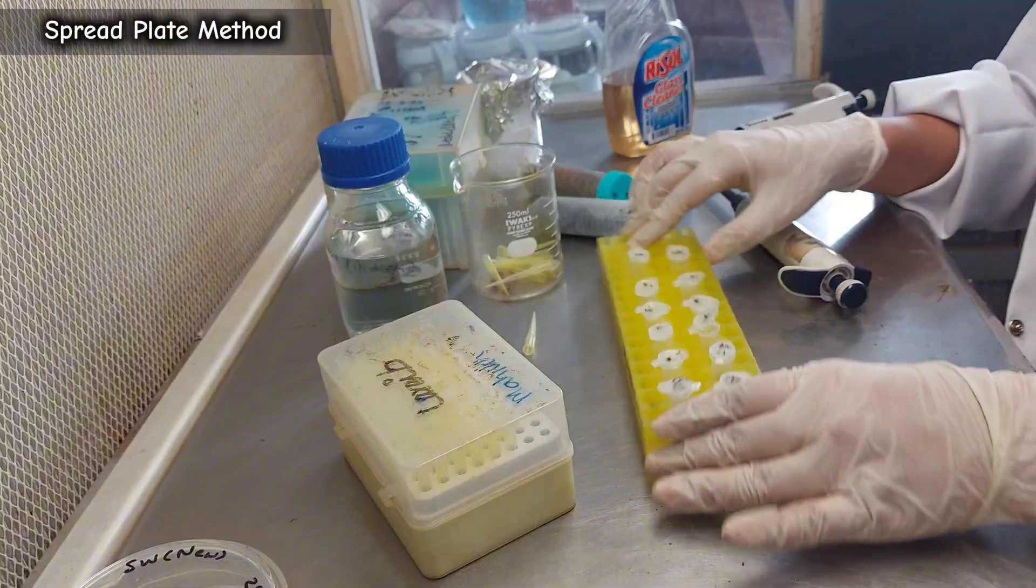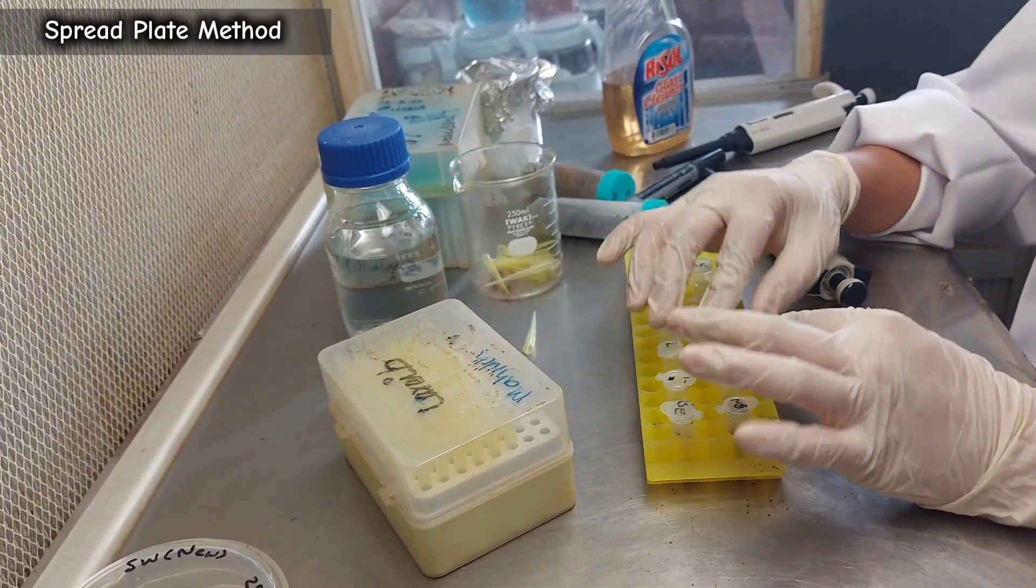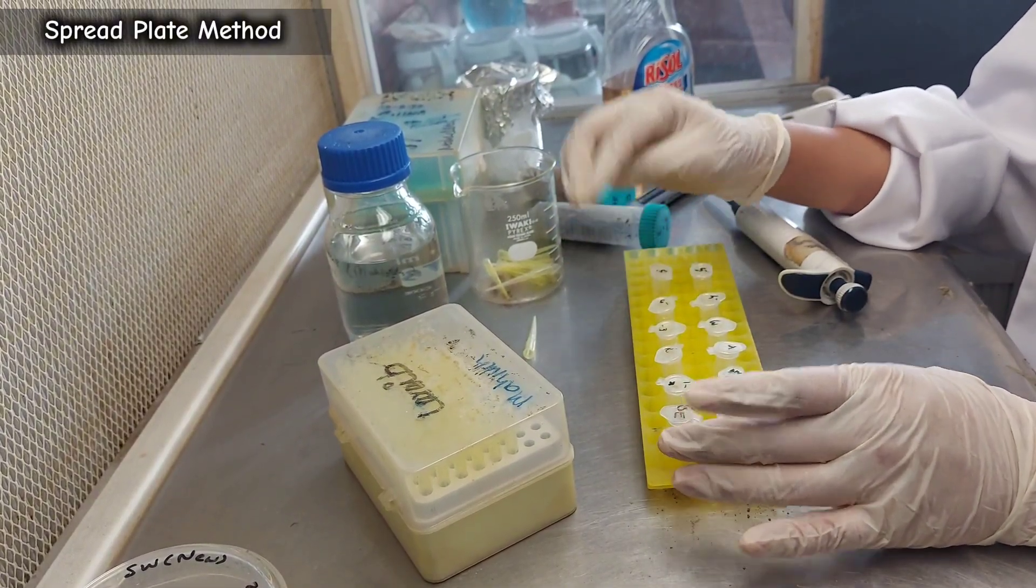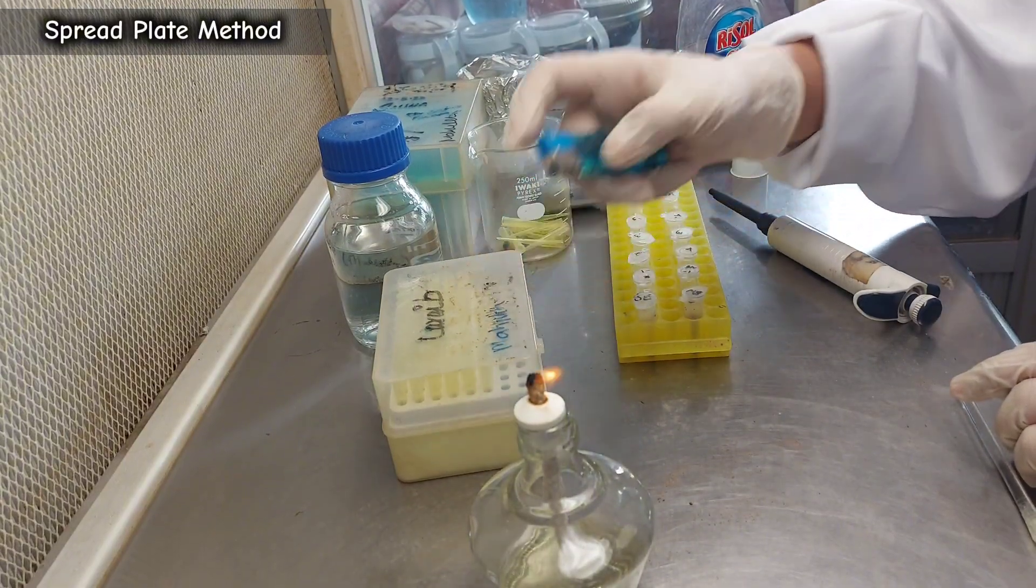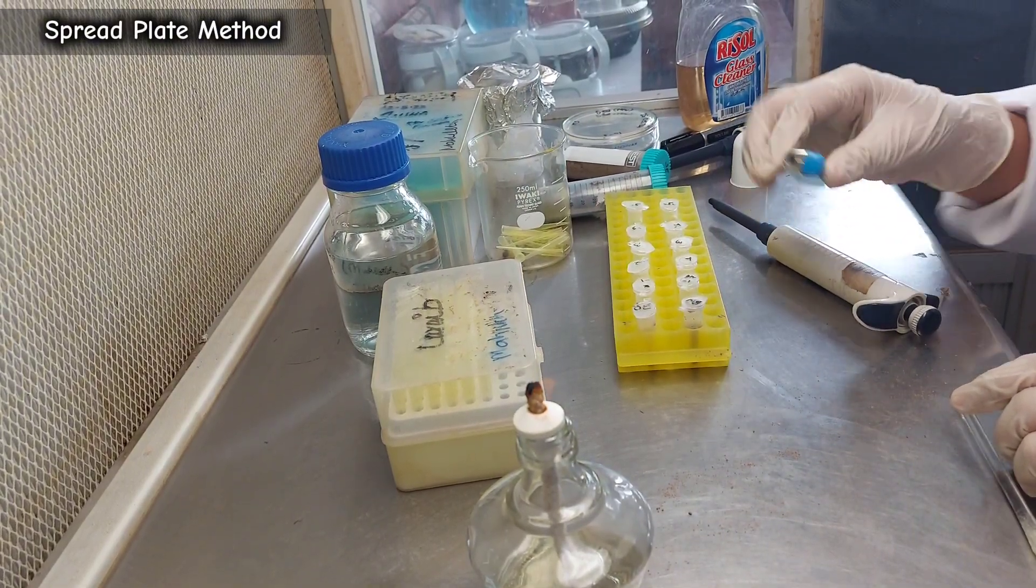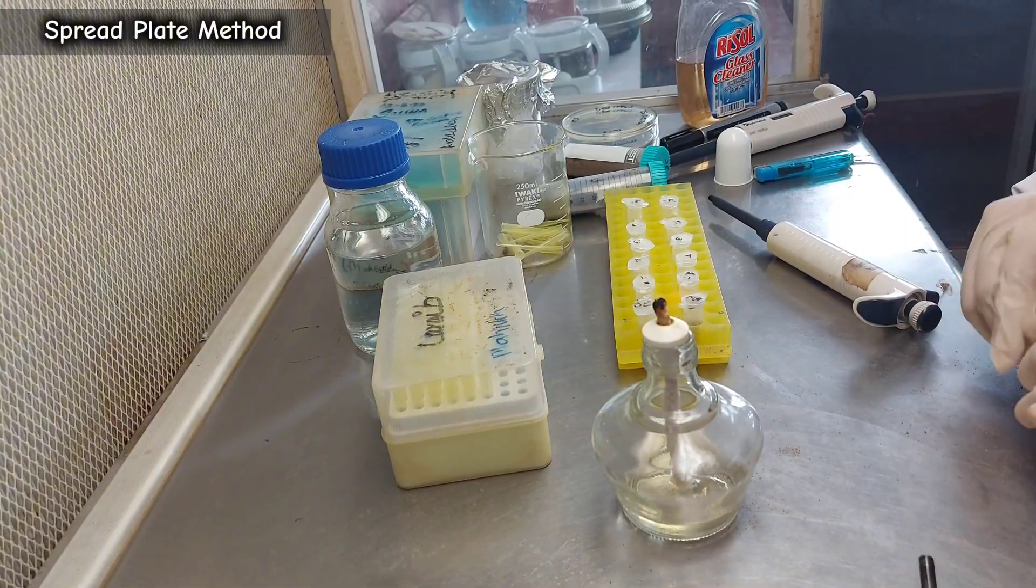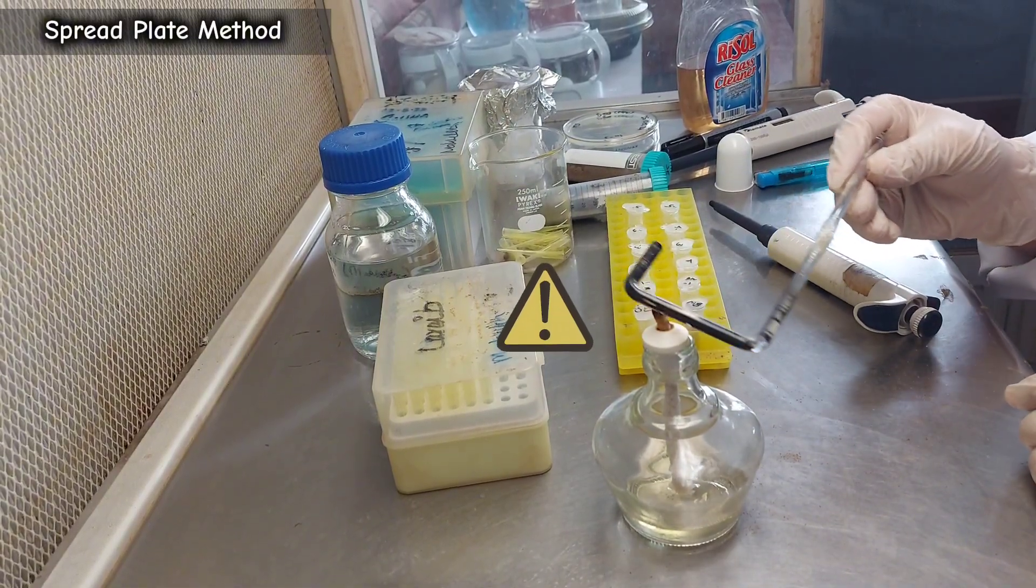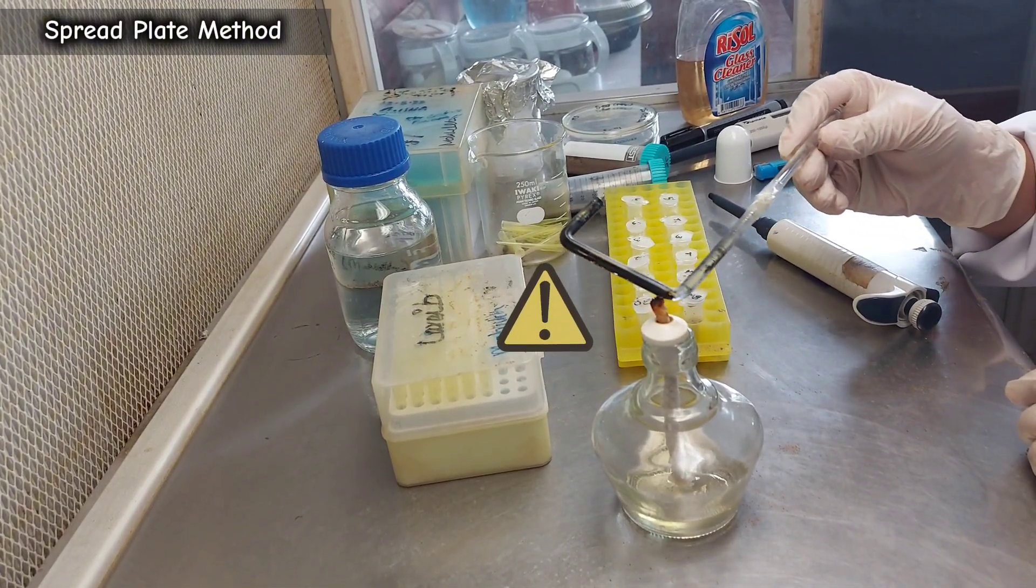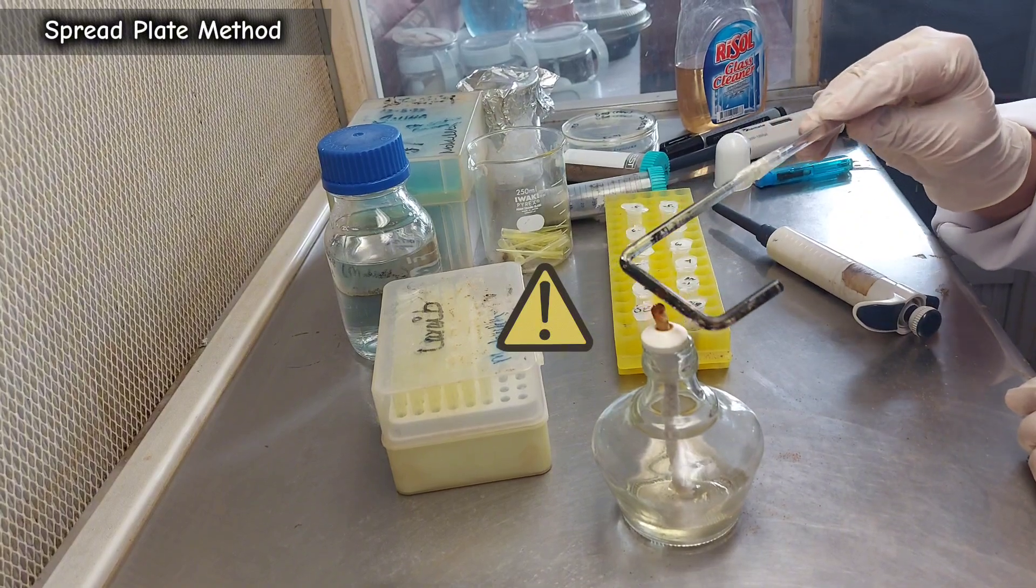Once the dilutions are prepared, we will proceed with the spread plating. Sterilize your glass spreader by gently warming it on the spirit lamp, then spraying it with ethanol. Always turn off the spirit lamp before spraying ethanol.